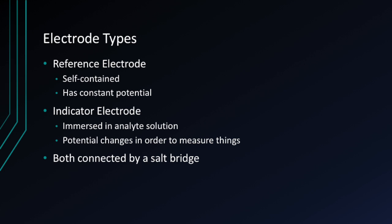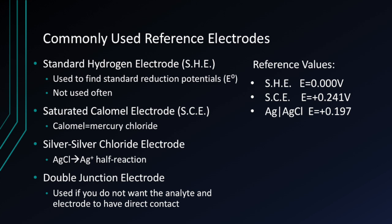There are two different types of electrodes: the reference electrode, which is self-contained and has a constant potential, and the indicator electrode, which is immersed in an analyte solution and the potential changes in order to measure things. Both are connected by a salt bridge. Commonly used reference electrodes include the standard hydrogen electrode, the saturated calomel electrode, and the silver-silver chloride electrode.